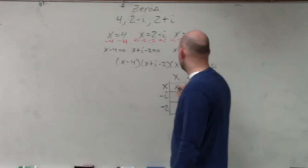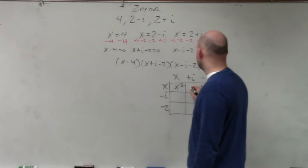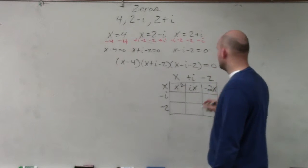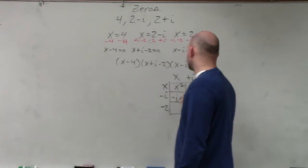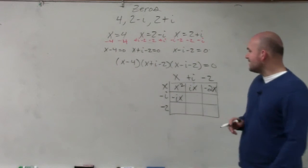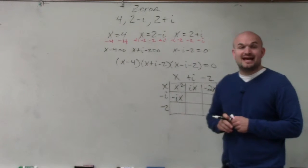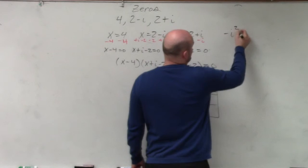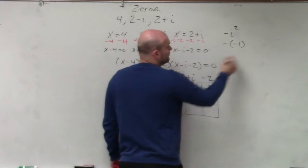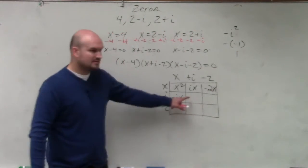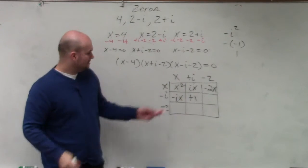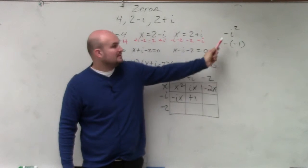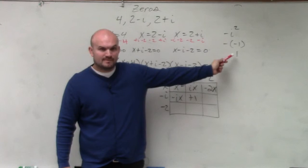x times x is x squared. x times i is ix. x times negative 2 is negative 2x. x times negative i, negative ix. Negative i times i is going to be negative i squared. Remember that's a negative i squared. i squared is negative 1, so that turns into a positive 1. Does everybody see that? Negative i times i is negative i squared. i squared is negative 1. Negative times negative 1 is positive 1. Does everybody see that?